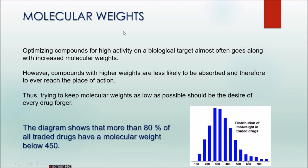The next thing is molecular weight — this is one of the very important parameters. Any drug should not have too much molecular weight. High molecular weight indicates a lot of elements, elemental compositions, and percentage weights, which creates problems in excretion. Only some of the drug will be absorbed and transported; the rest will be left over. Optimizing compounds for high activity on a biological target often goes along with increased molecular weights. However, compounds with higher weight are less likely to be absorbed. Thus, trying to keep molecular weights as low as possible should be the desire of every drug designer.